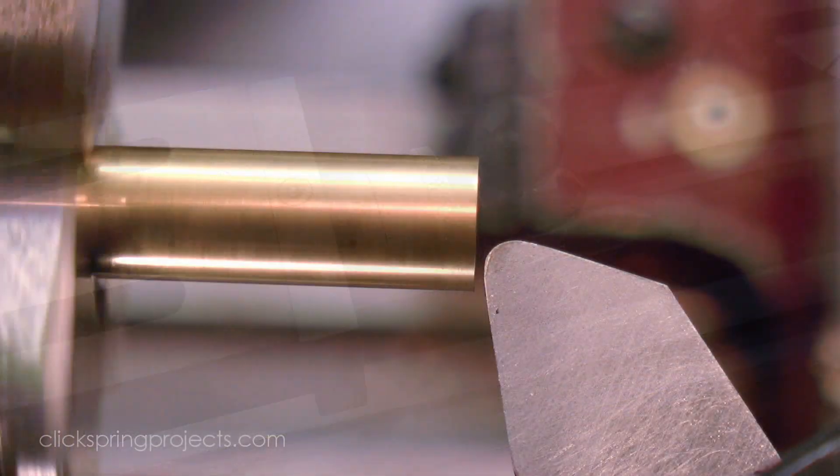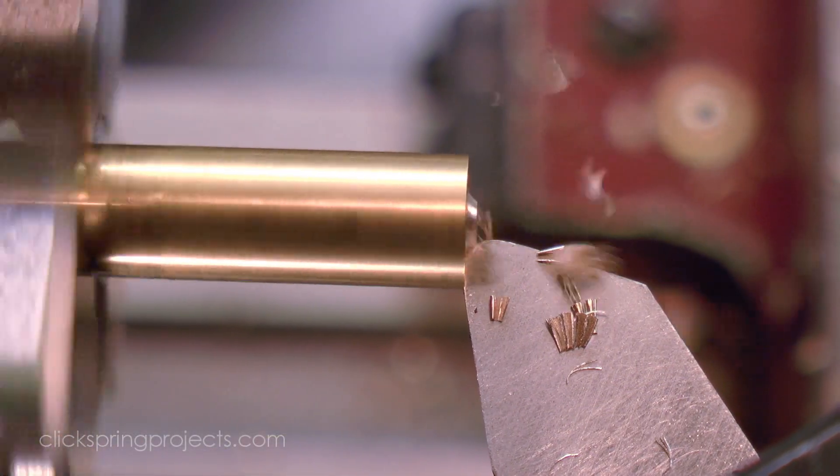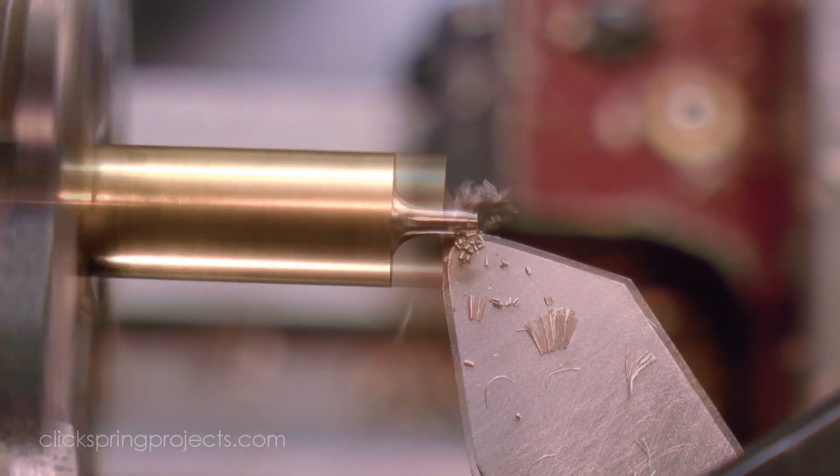I take up the backlash on the top slide, and zero the handwheel collar, and then I do a practice run first, using some free cutting brass.